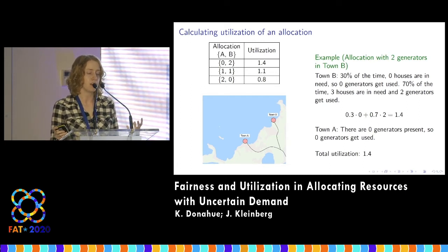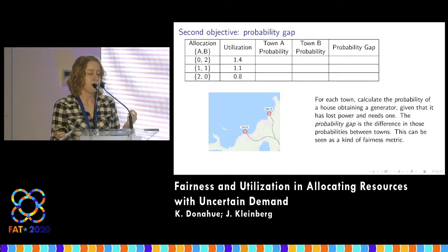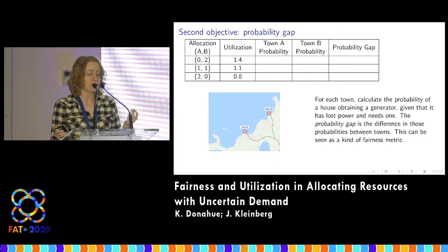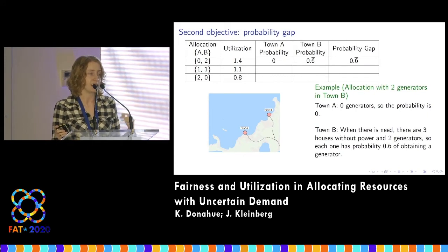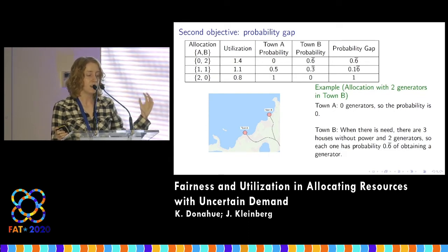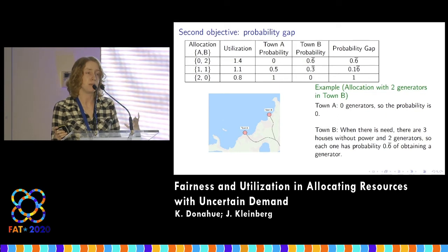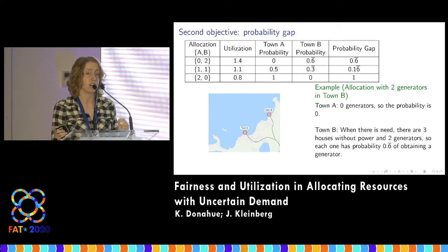But this seems problematic: everybody who gets help will be in town B, and everybody who doesn't get help will be in town A — it might seem like an unfair allocation. This motivates a second objective: the probability gap. For each town, you calculate the probability of getting help, and the gap is the difference between towns. In this allocation, town A has no generators so its probability of help is zero; in town B, with three houses and two generators, each house has a two-thirds chance of assistance. The gap is two-thirds. The probability gap is something we want to minimize — ideally it would be zero. The smallest probability gap is for the allocation with one generator in each town.